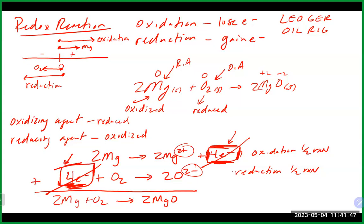This should always be the case for ionic compounds: it is typically the metal that loses electrons to the nonmetal. Whenever you have a metal and a nonmetal together in an ionic compound, the metal should always be the one going through oxidation, and the nonmetal should always be the one accepting those electrons and going through reduction.